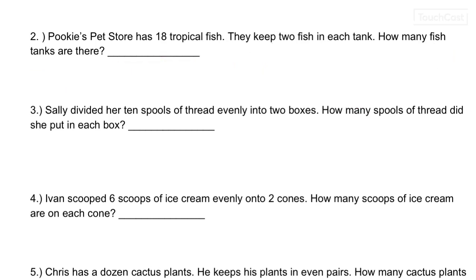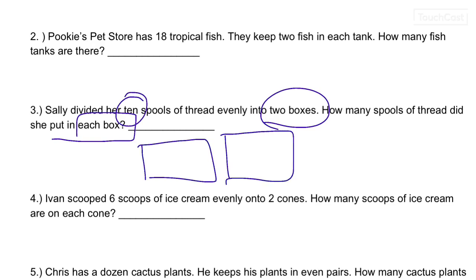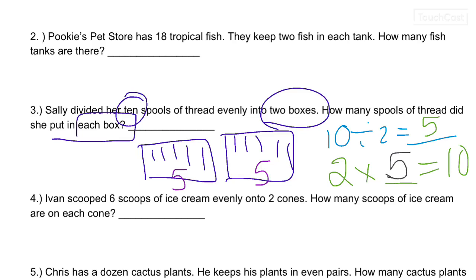Alright, let's go to number 3. Sally divided her 10 spools of thread evenly into 2 boxes. How many spools did she put in each box? So she has 2 boxes. She's evenly putting 10. [Counting 1 through 10]. So count how many are in each. You should have 5 in each. What would the division problem be? 10 divided by 2 equals blank, which we just figured out is 5. Or we could do 2 times what gives us 10, which would still give us the magic number 5.